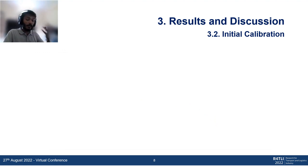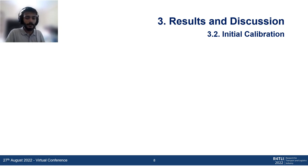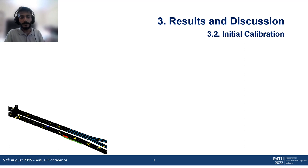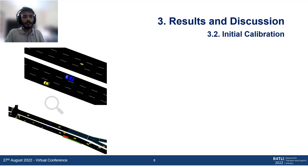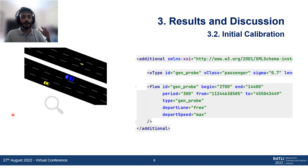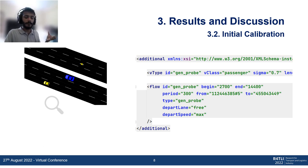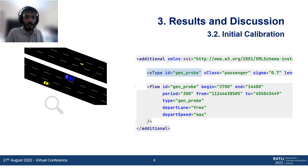Moving on to the results section — even though the vehicles are moving and the simulation seems to be working fine, we need to calibrate the model in order to match it with reality. What we did was add a probe vehicle — shown in blue — which travels the entire corridor. It is inserted into the simulation every fifth minute, travels the full corridor, and we can use this to get the travel duration of that corridor, calculate travel speeds, and then match it with reality by calibrating certain parameters.